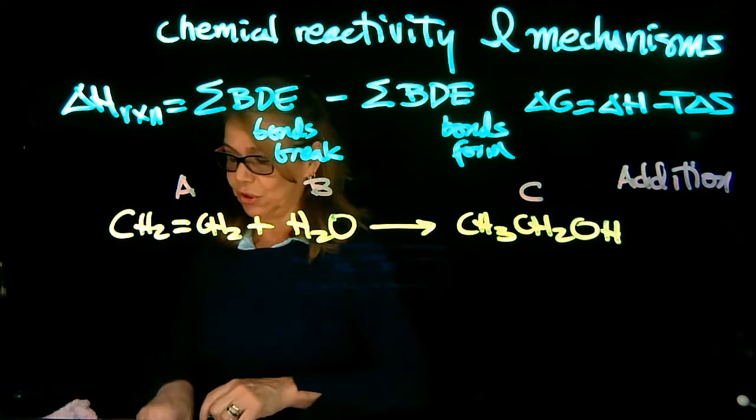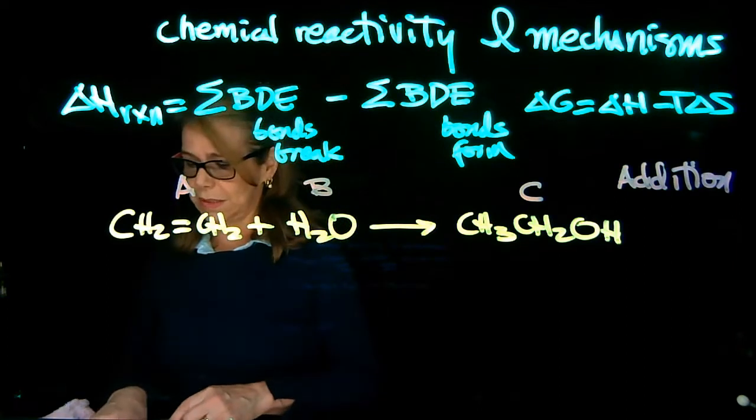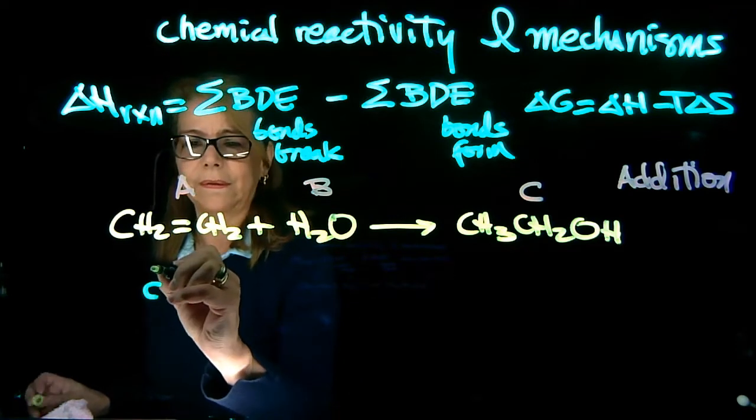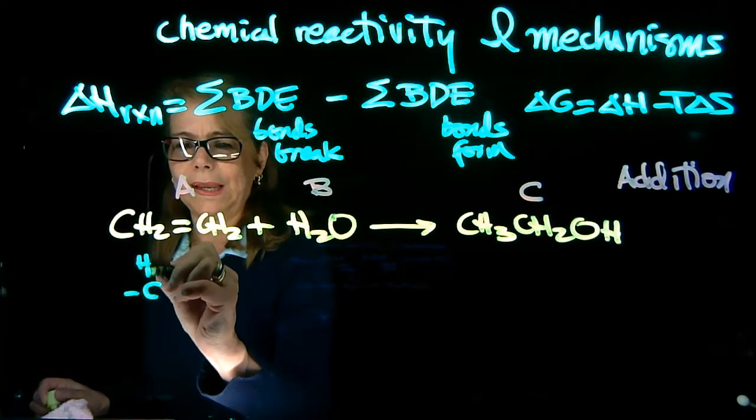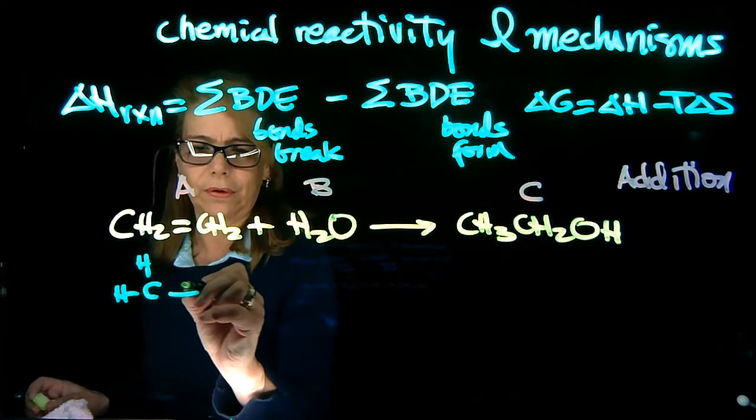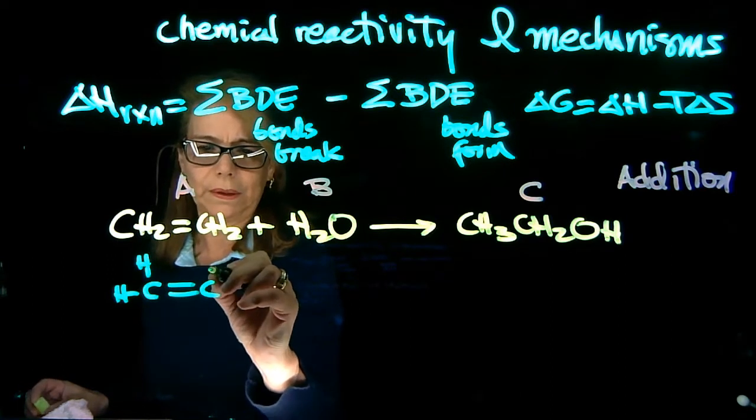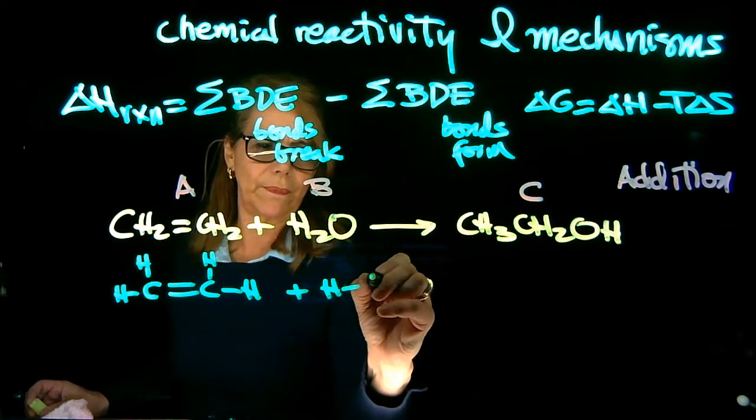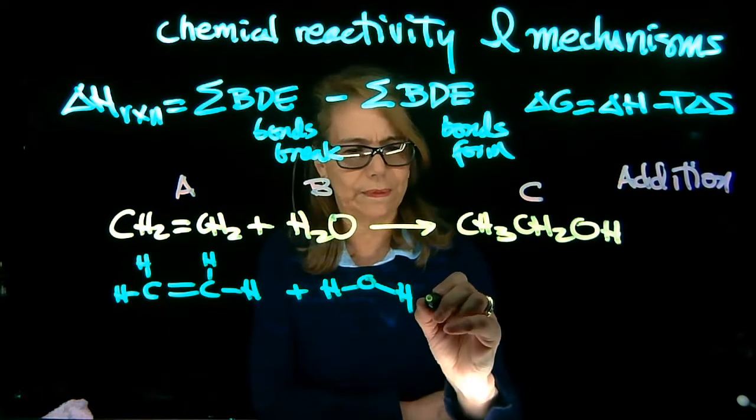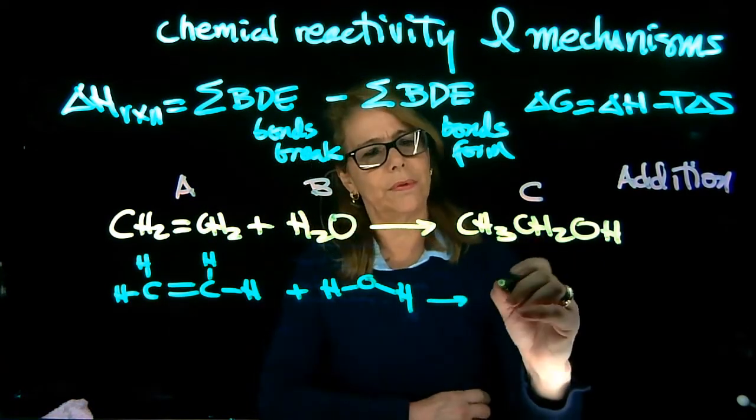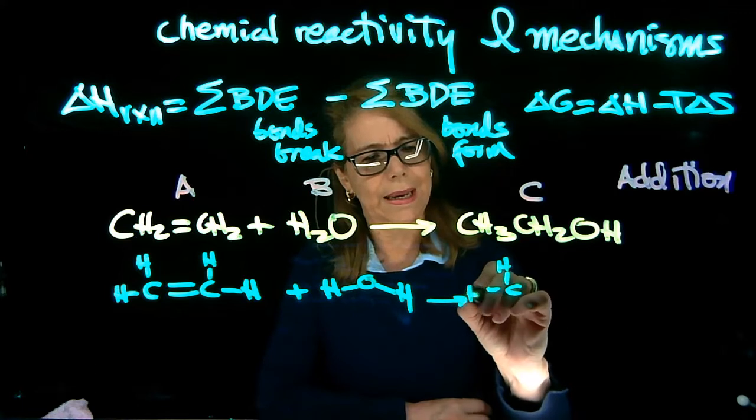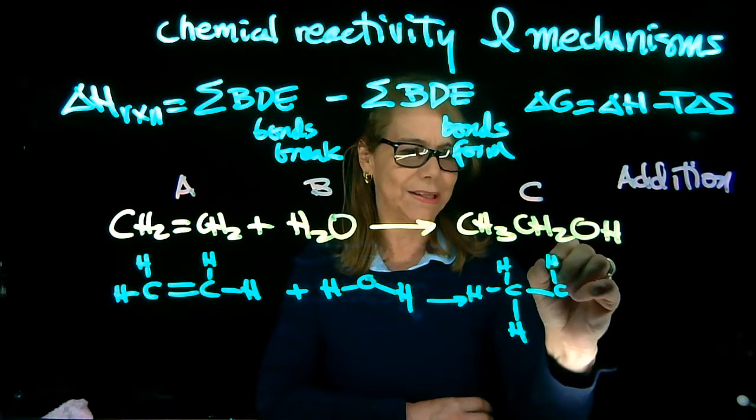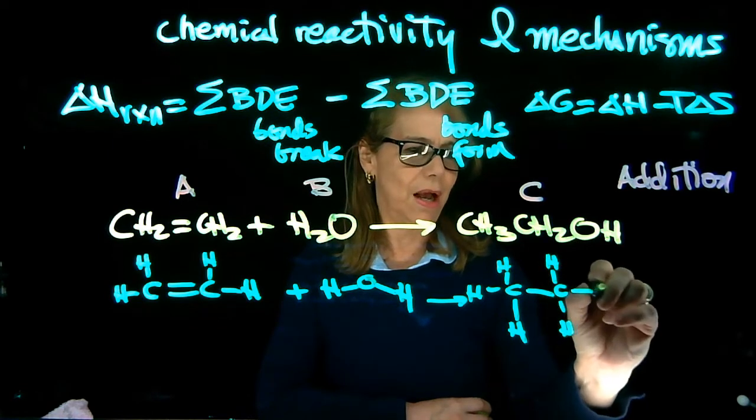Now I'm going to redraw this showing the bonds, being more explicit. I'm going to do H-C=C-H with a double bond, and now I'm going to draw water more Lewis-like, and here I'm going to have H-C-C-H with a new bond here, and now H-C-C-O-H.